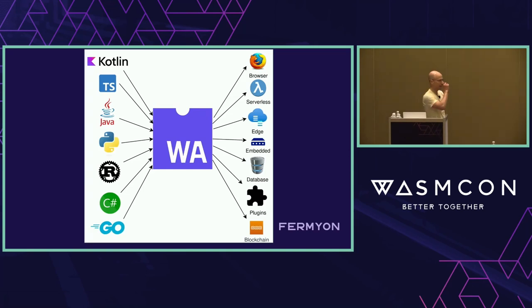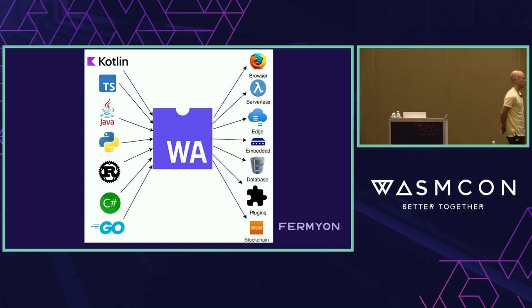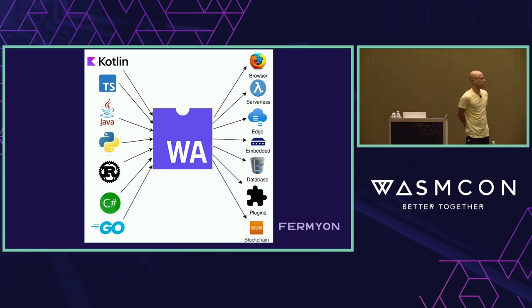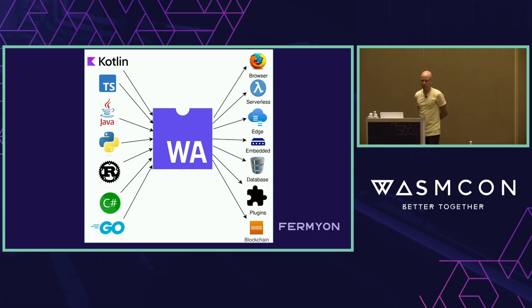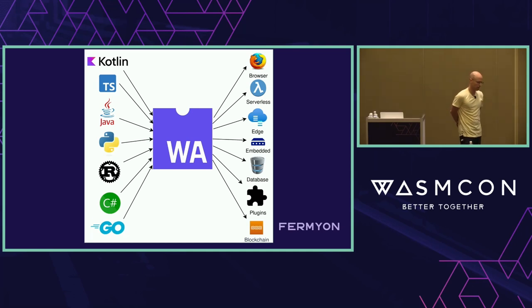I actually showed this slide in a previous presentation last year, but I still like to look at it as sort of the long-term vision to really fulfill the polyglot promise that WebAssembly offers — so that you can take source code written in any of these languages and compile it to WebAssembly and target a wide variety of hosts, whether embedded, browser, serverless, database, stored procedures, all of the above. Frankly, we're not there yet, but we're getting closer year by year. In particular, we'll talk about Python today, but at Fermion we want to see all these languages succeed.